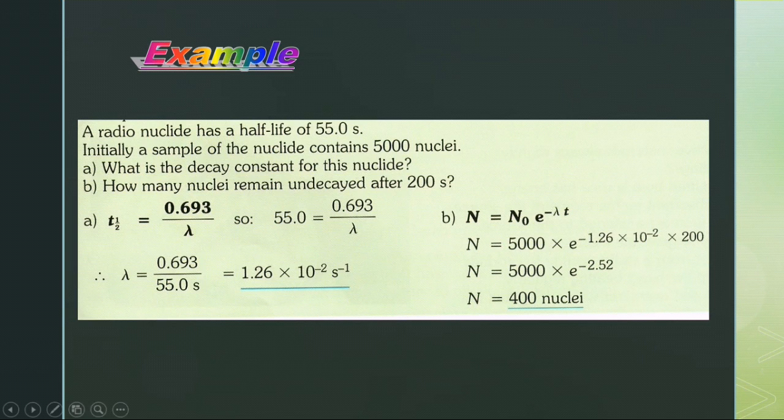For part (b), how many nuclei remain undecayed after 200 seconds? We use the equation N = N₀e^(-λt). N₀ is the original number of nuclei, which is 5000. λ we just calculated as 1.26 × 10⁻². t = 200 seconds. So N = 5000 × e^(-2.52) = 400 nuclei.